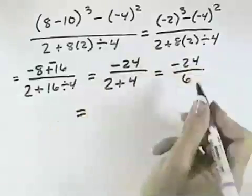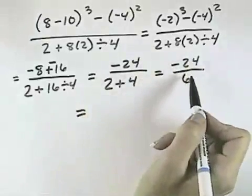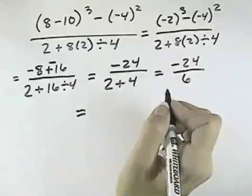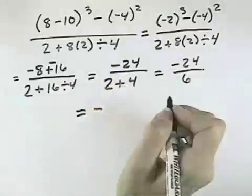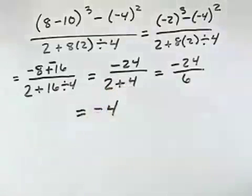So that our final result is to do this quotient of negative 24 divided by 6. A negative divided by a positive is negative, and 24 divided by 6 is 4, for a result of negative 4.